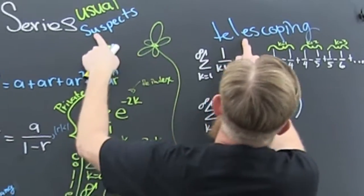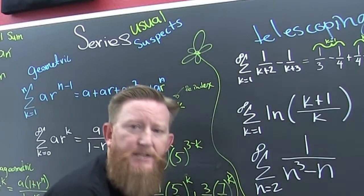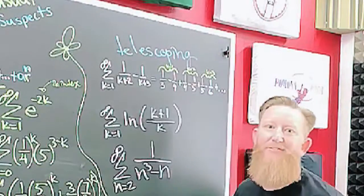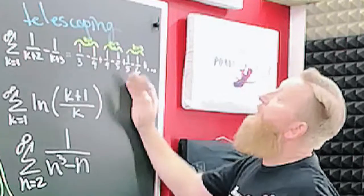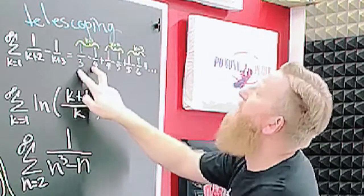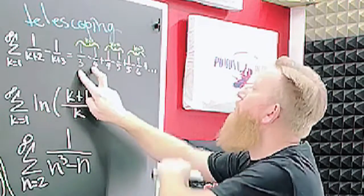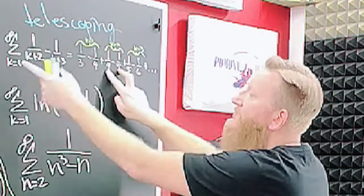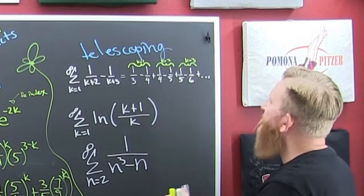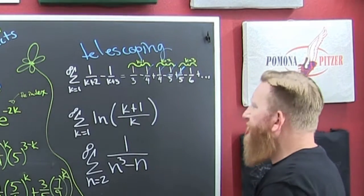Here's another one of the usual suspects: the telescoping series. These three are in the private collection. I wrote this one out a little bit — just the first few terms. When k is one, you get this: one third minus one fourth. And then when k is two, and then when k is three. What do you see? They all just start cancelling each other off.